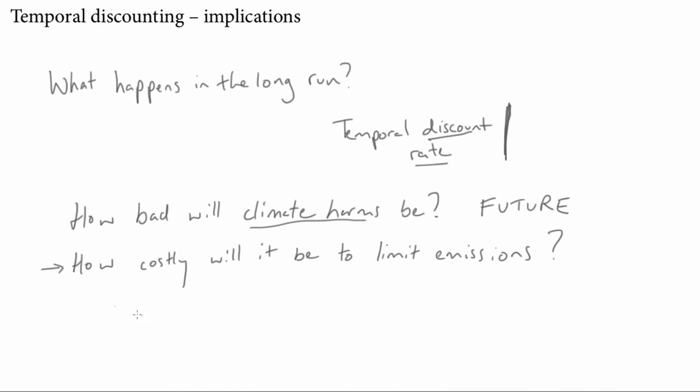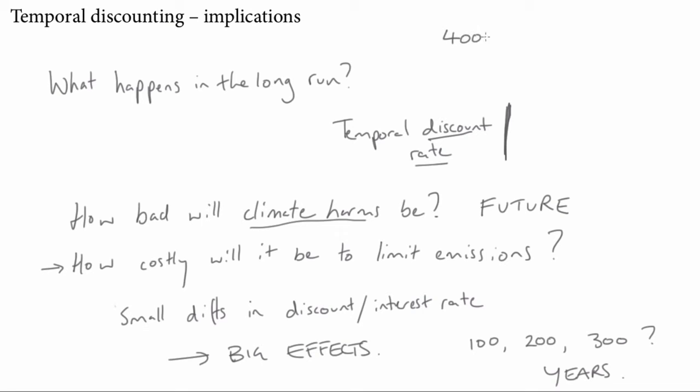We've already noted that very small differences in the discount rate or in an interest rate have big effects when it's over a long time scale. And we are taking very seriously in the case of climate change timescales of 100, 200, 300 or more years. That's a very long time indeed compared to sorts of decisions you might make about saving money. So just to compare, let's make it really dramatic and go for 400 years.